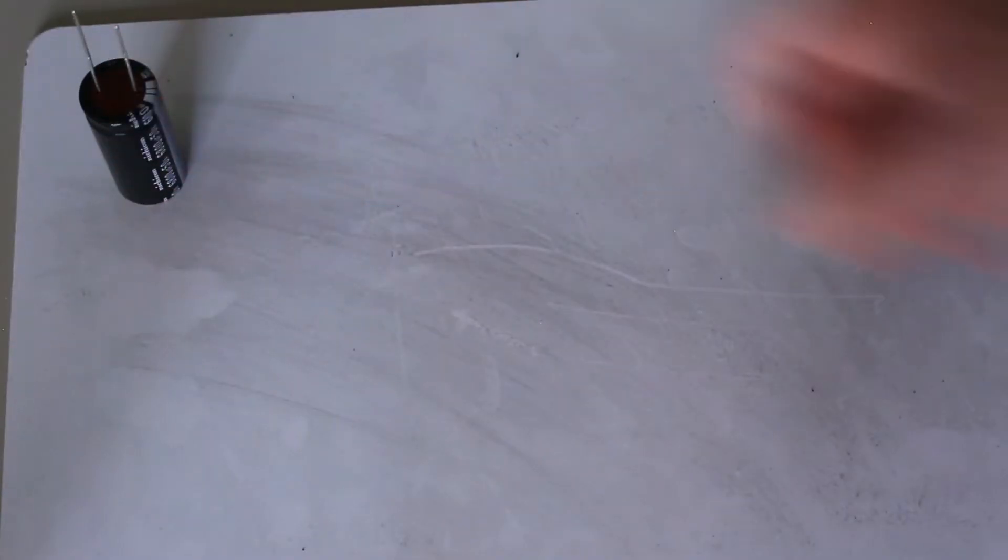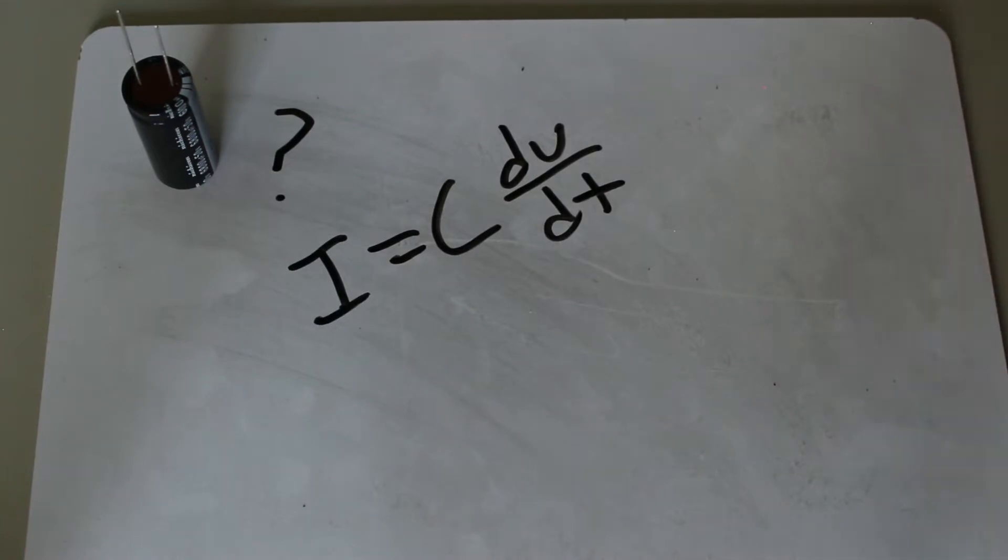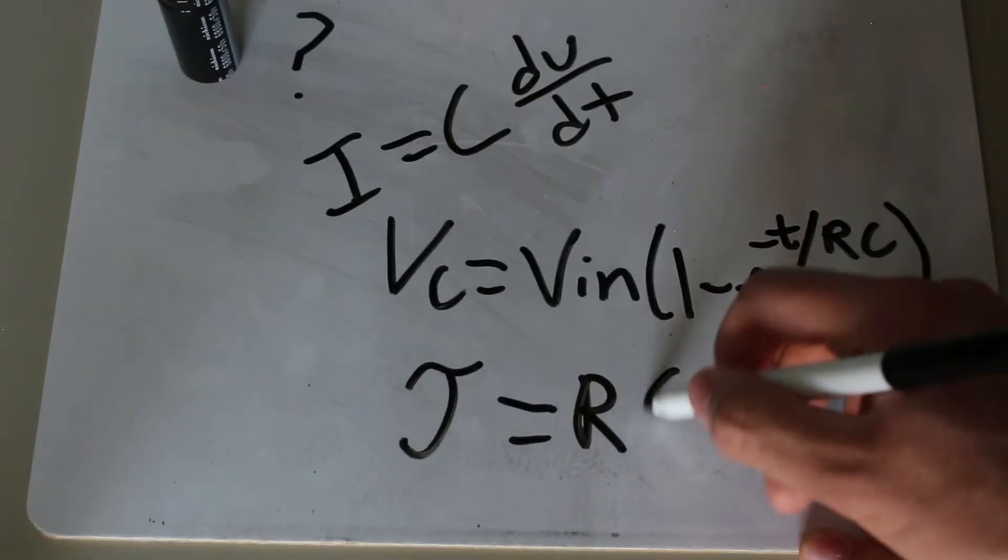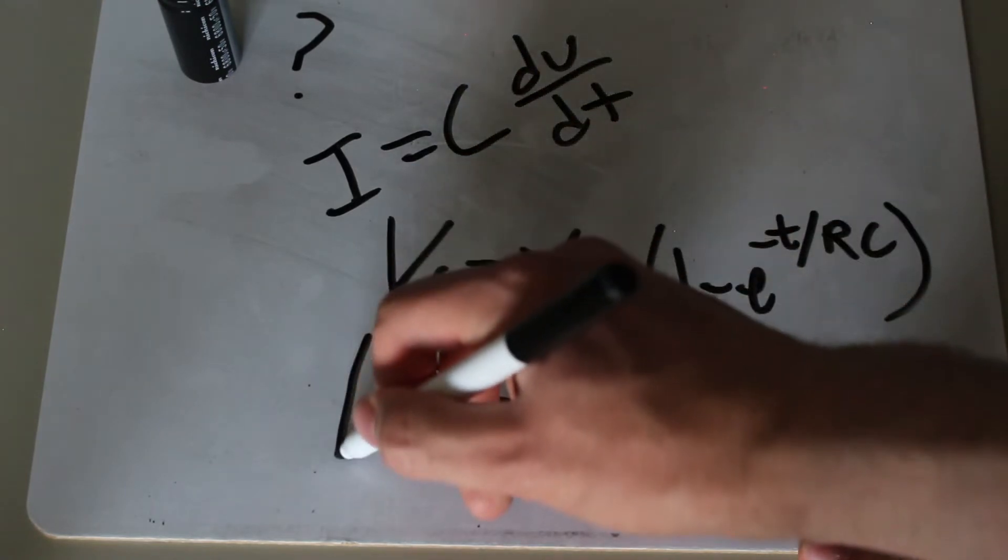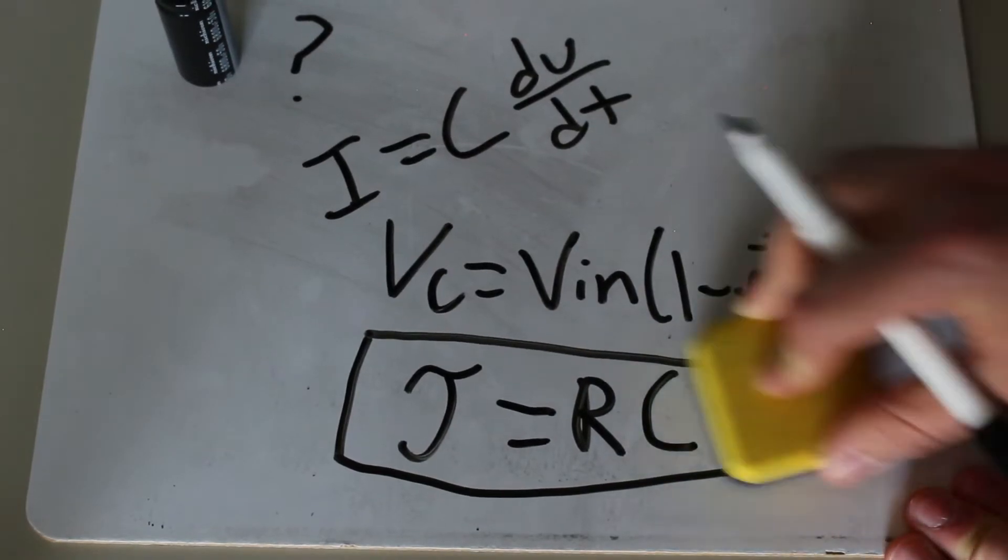To start, let's figure out theoretically how we can find the value of this capacitor here. We have several equations at our disposal, some including calculus, and others are quite complicated. But the simplest equation, and most effective it seems, is this time constant equation, which is just the time constant equals the resistance times the capacitance.